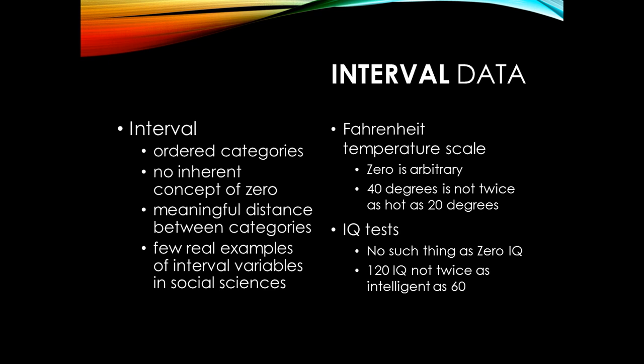Interval data is based on the assumption that there is a zero, but that zero doesn't particularly mean very much — it's been arbitrarily decided. The example here is a Fahrenheit temperature scale; there is a zero degrees Fahrenheit, but looking at the history of how thermometers were designed, it's relatively arbitrary. If you're sitting in a room at 40 degrees Fahrenheit, you don't feel twice as hot as someone sitting in a room at 20 degrees Fahrenheit — you might feel a little hotter, but you couldn't say definitively twice as hot.